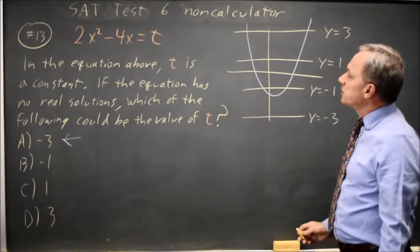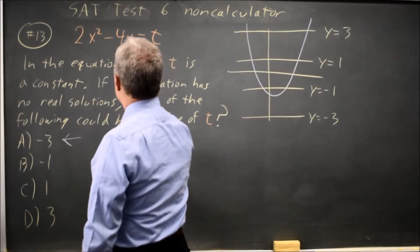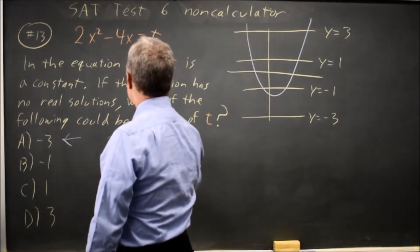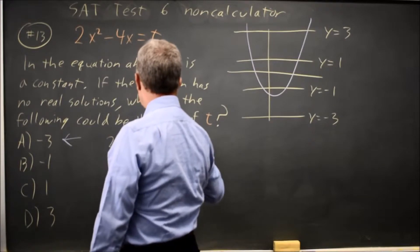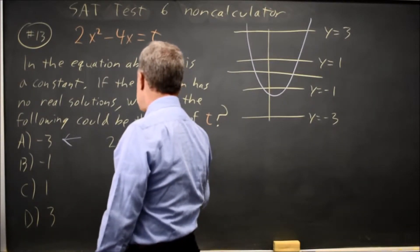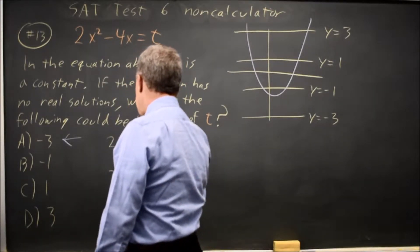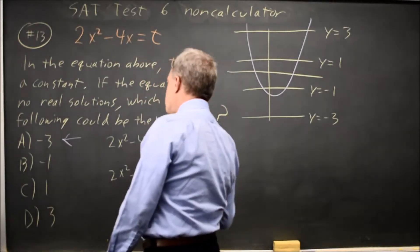Another way of doing this is 2x squared minus 4x equals t. Subtract t from both sides. That's 2x squared minus 4x minus t equals 0.